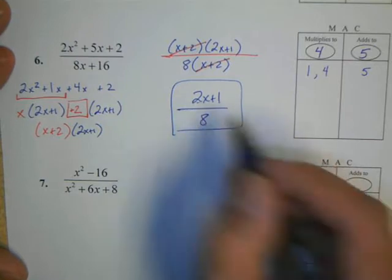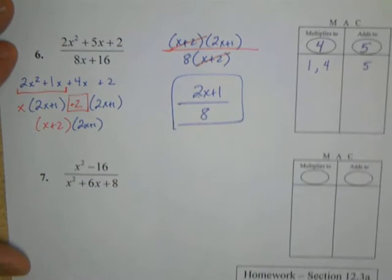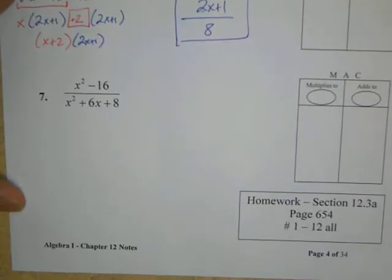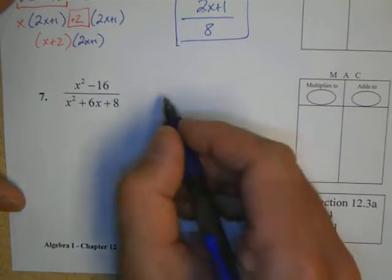Once again, the 2 and the 8 may not cancel because the 2 is connected to the x and the plus 1, and you may not cancel unless you can cancel between all three and factor out first.